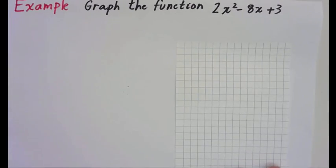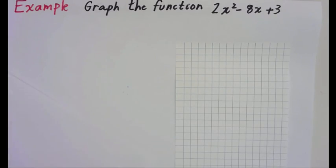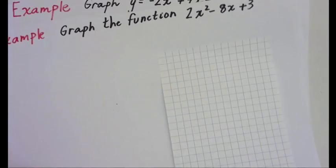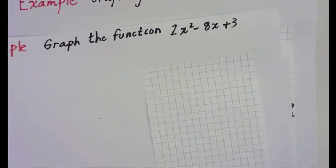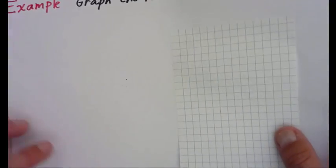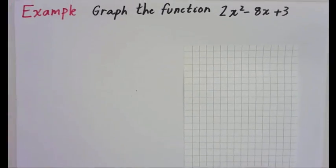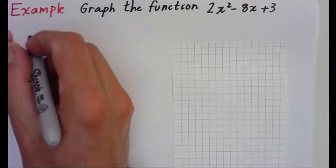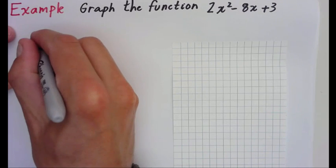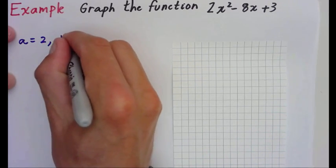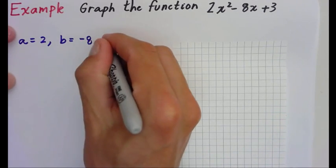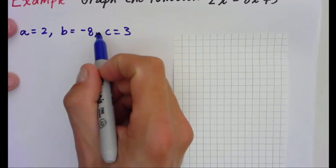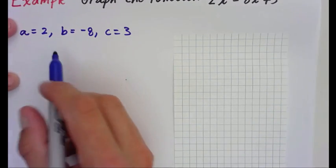Graph the function 2x squared minus 8x plus 3. So we're going to graph this function. The first thing I'm going to do is identify a, b, and c. So a is equal to 2, b is negative 8, and c is 3. What this tells me is that my parabola is going to open up — it's going to be that u shape — because a is greater than 0.